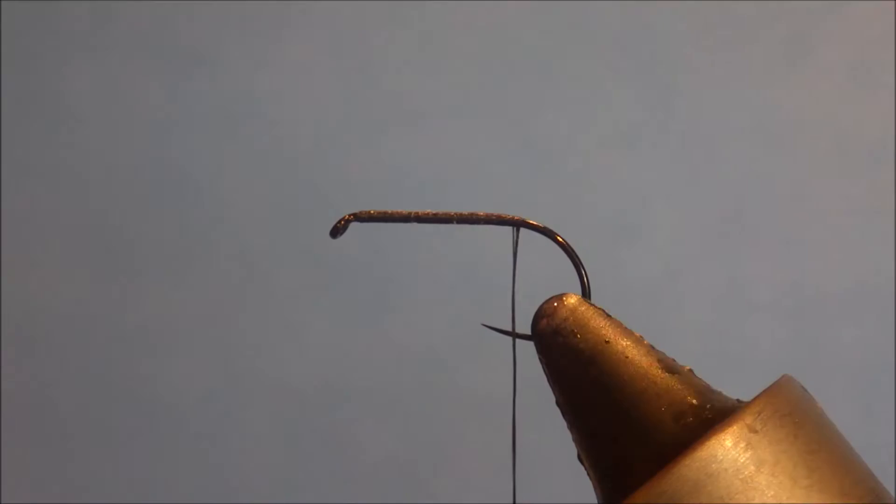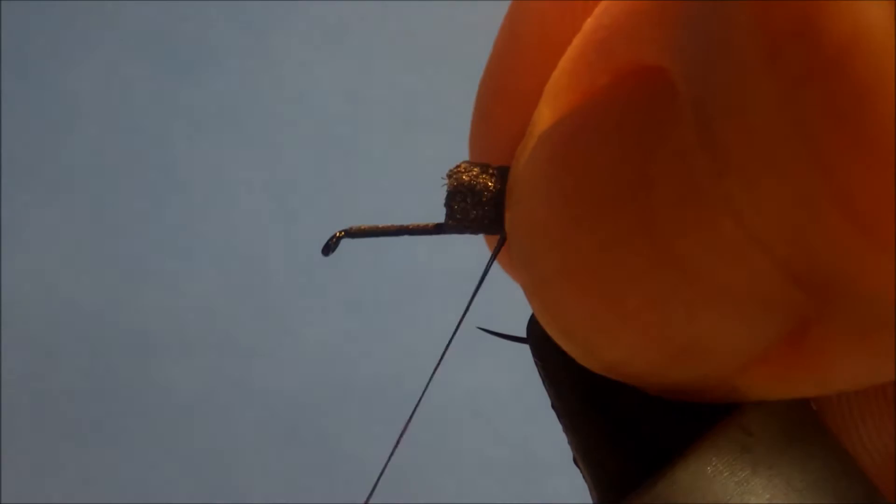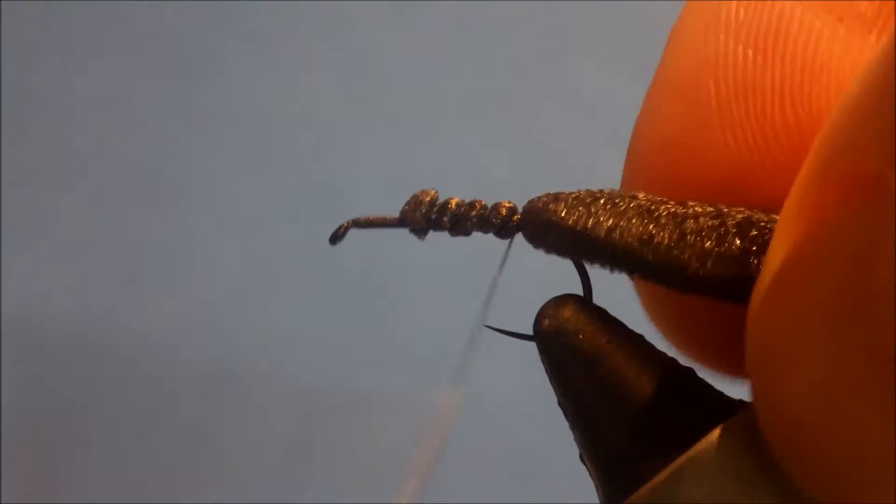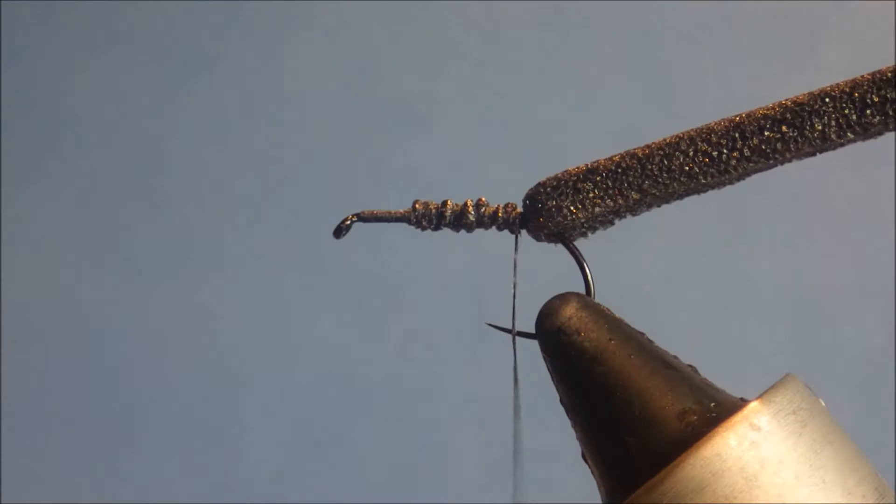Then I've got a strip of black foam that I've cut. It's about a mil and a half, two mil square. Obviously, you would need to change the size depending on the size of beetle you're tying. I've run my thread back up to about the two thirds position. So, there's a third, a third clear. And I want to just catch in the foam and take it back. Tidy everything up.